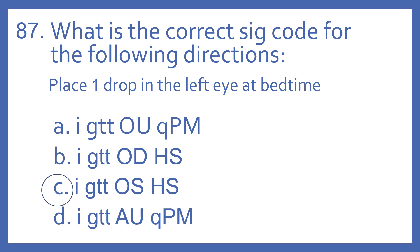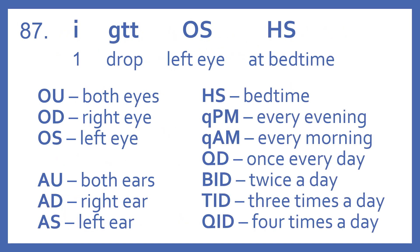And the answer is C. Place one drop in the left eye at bedtime would be 1-GTT-OS-HS. I is the Roman numeral 1, GTT means drop, OS is the left eye, and HS is at bedtime. And some other SIG codes to be familiar with.